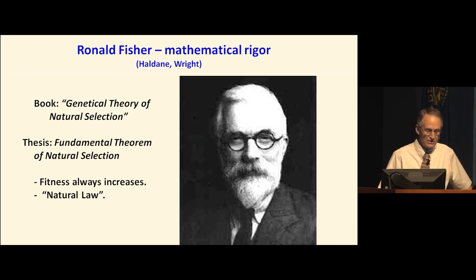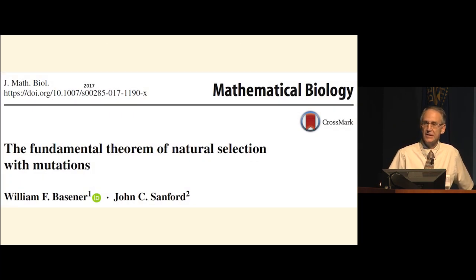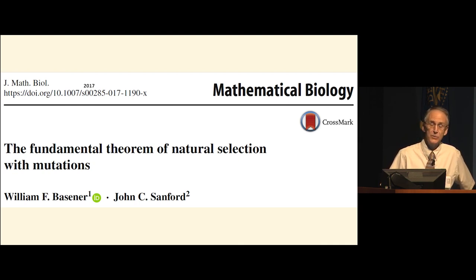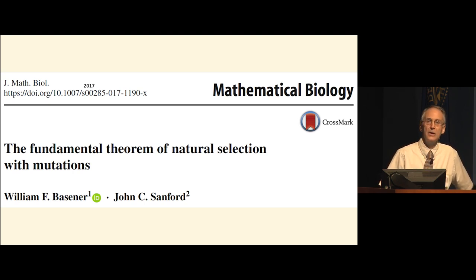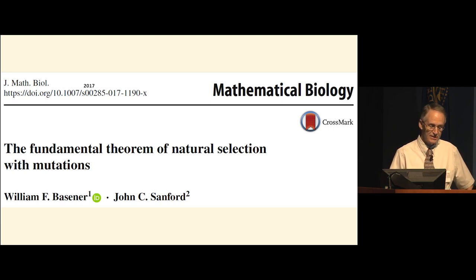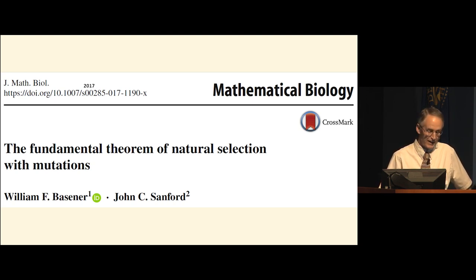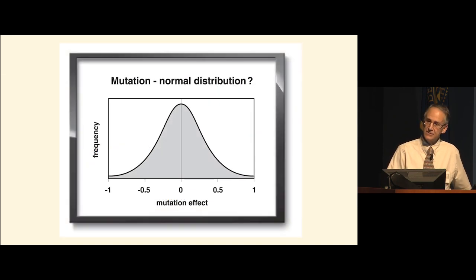Last year, a mathematician and I critically assessed his formulation and found there were major problems with it. One of the most foundational premises for his mathematics was the assumption that mutations had a net neutral effect. We now know that's clearly wrong. So it requires a reformulation of his theorem. We have to include mutations in the equation, and that's what we published on in mathematical biology last year.